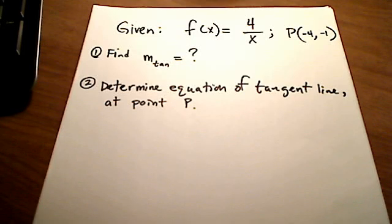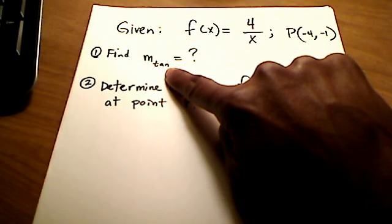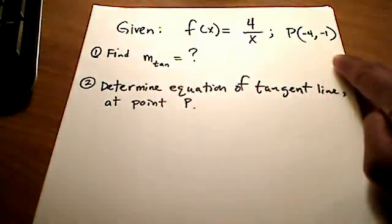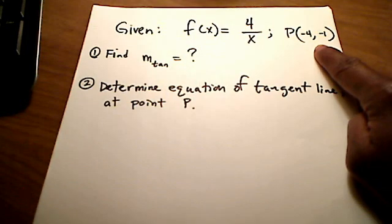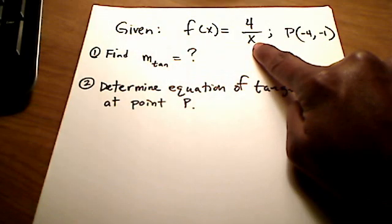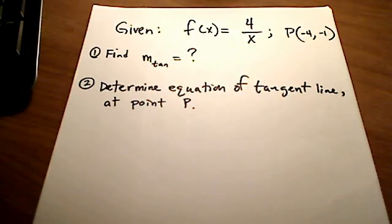All right. In this video, I want to demonstrate how to find the slope of a tangent line at a particular point, in this case at point P which is negative 4, negative 1, of a given function. It's a rational function, 4 over x.